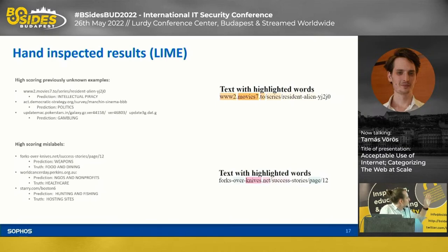Then we have 'democraticstrateg.org', which is likely to be politics, and finally 'pokerstars.in', which is obviously a gambling site.